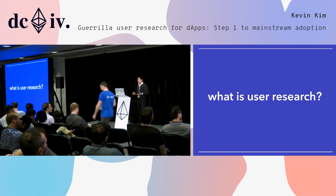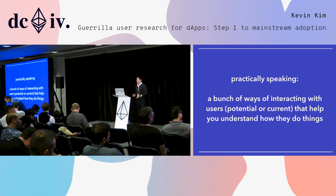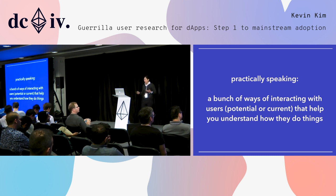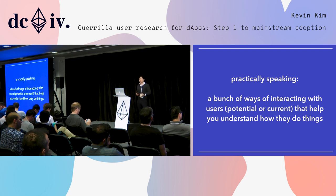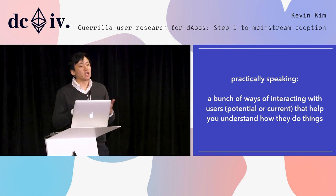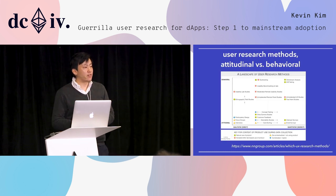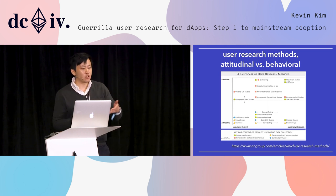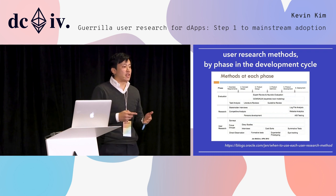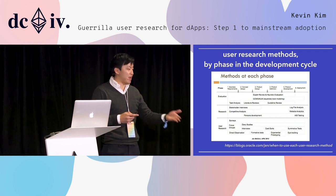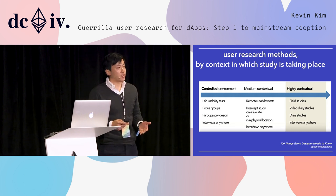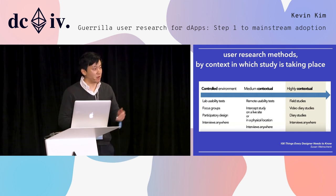So what is user research? My colloquial definition is a bunch of ways that you could interact with users — potential or current users — that help you understand how they do things. These research methods can be cut in a variety of ways: what do they track, how do people think or actually behave, the phase of the development cycle you're in, or the context in which the study is taking place. You don't have to memorize these slides.